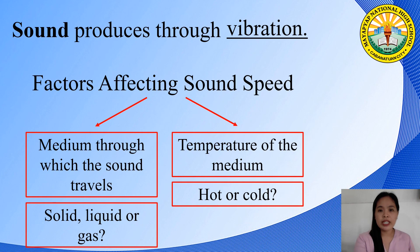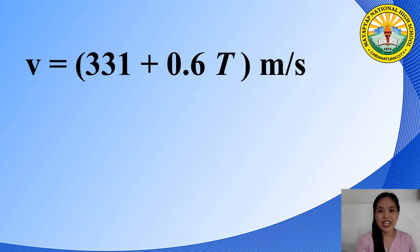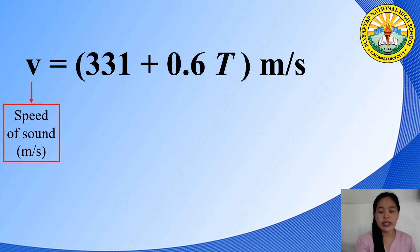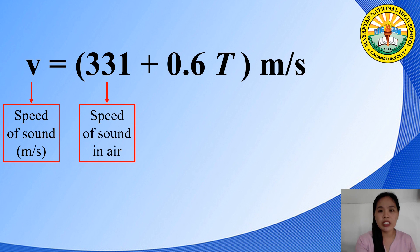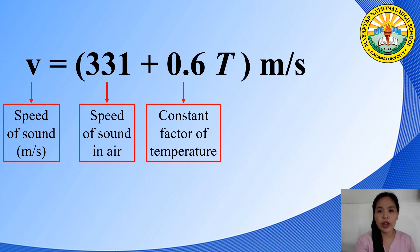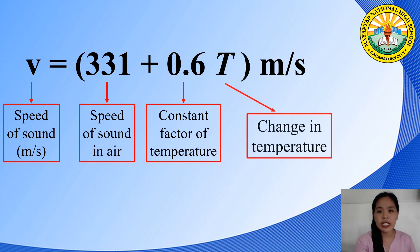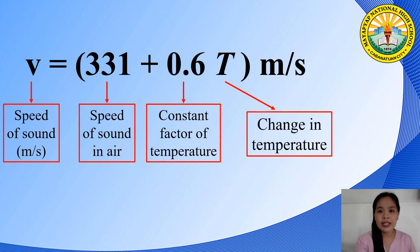For solids and liquids, the effect of change in temperature is appreciable. In solving for the speed of sound in air, we use the equation V = 331 + 0.6 × T, where V represents the speed of sound in meters per second. 331 is the speed of sound in air at normal atmospheric pressure and at a temperature of 0°C or 273 Kelvin. 0.6 is the constant factor of temperature, and T represents the change in temperature in degrees Celsius.